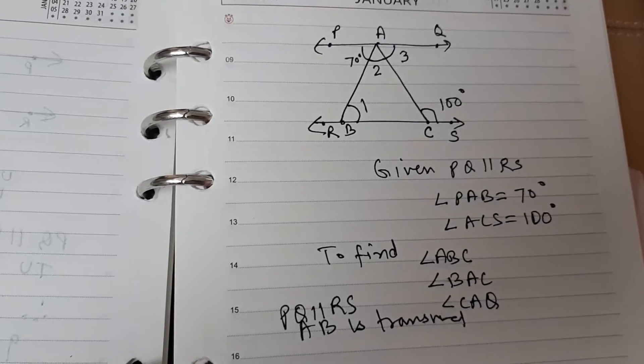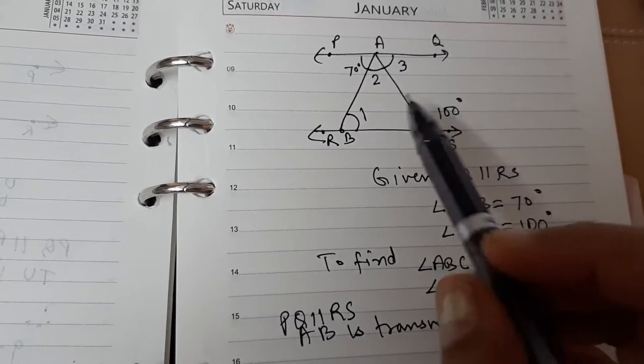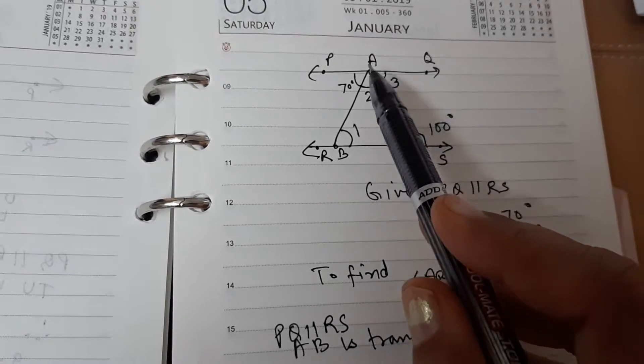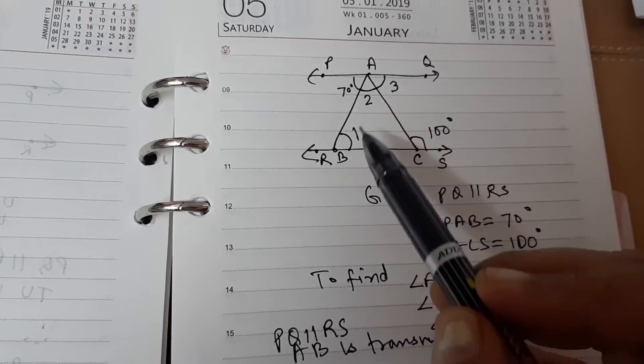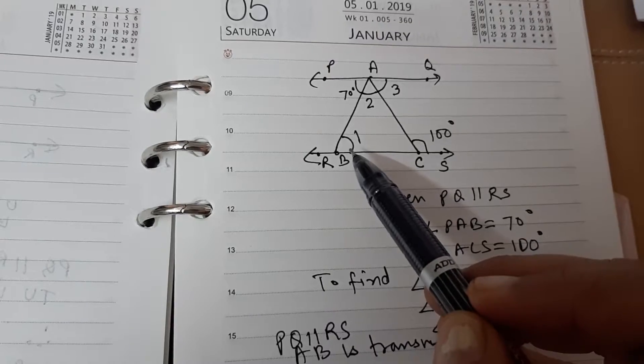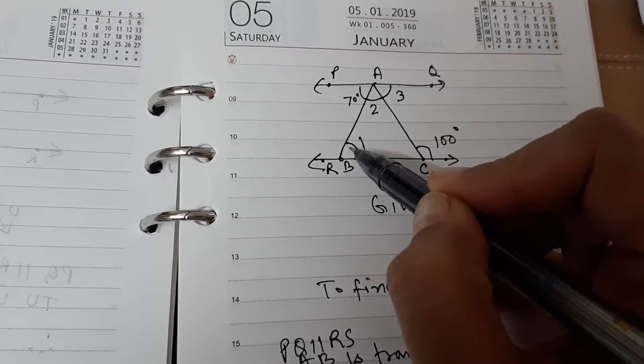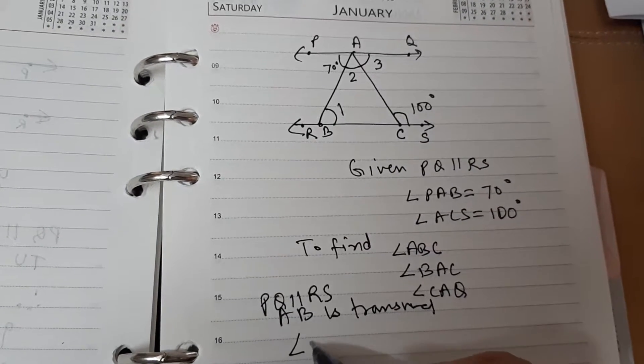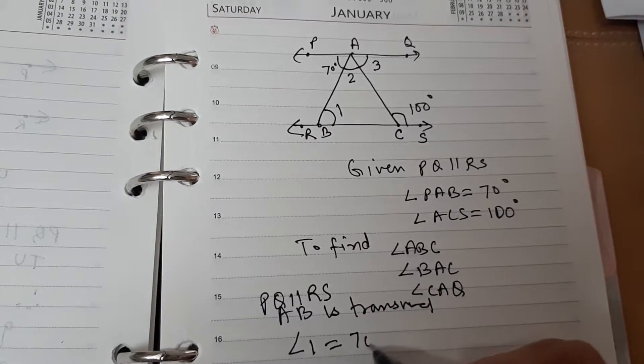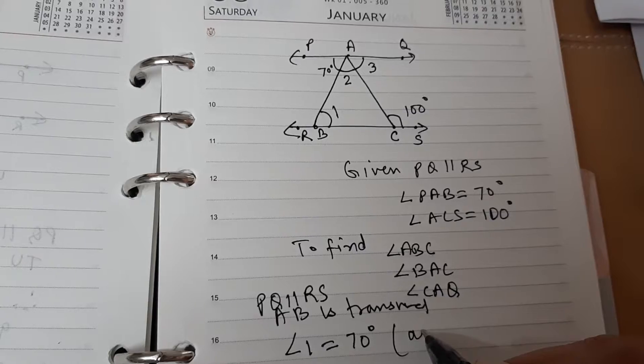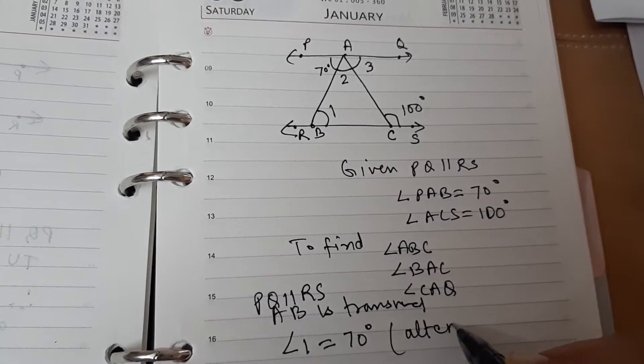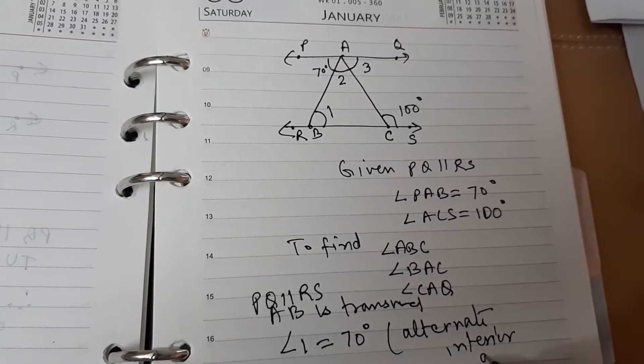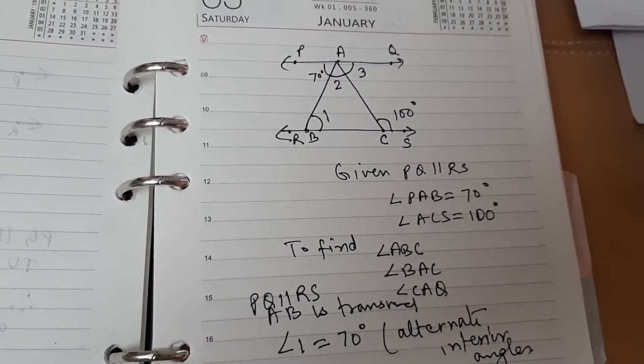These are alternate interior angles. And we know that when two parallel lines are cut by a transversal, then alternate interior angles are equal. So, we can say that angle 1 will be equal to 70 degrees, alternate interior angles.